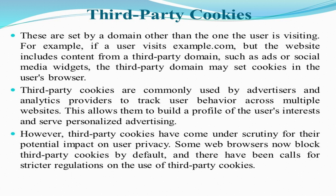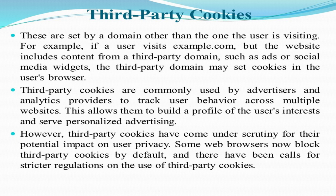The third type of cookie is the third-party cookie. These are set by a domain other than the one you are visiting. For example, if a user visits example.com but the website includes content from a third-party domain such as ads or social media widgets, that third-party domain may set cookies in the user's browser. This means whenever you go to any website that is running ads from Google AdSense or any other AdSense provider, different ad agencies are setting their own cookies in your browser. Third-party cookies are commonly used by advertisers and analytics providers to track user behavior across multiple websites.